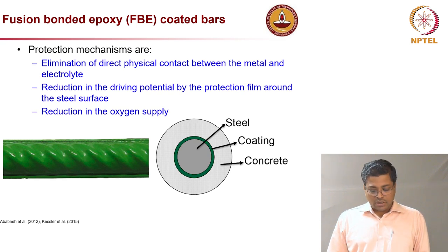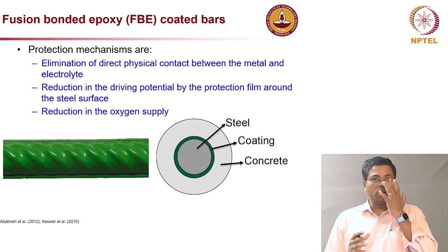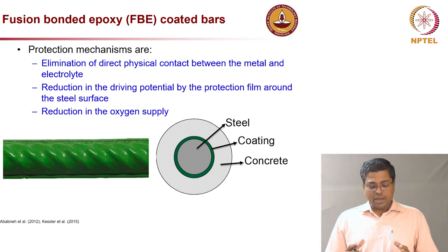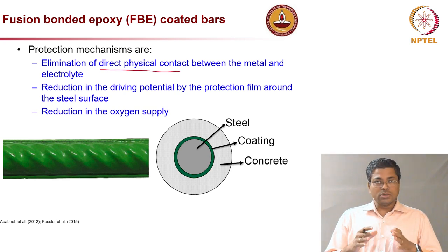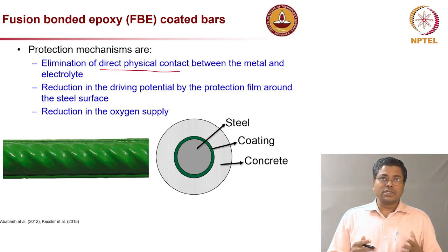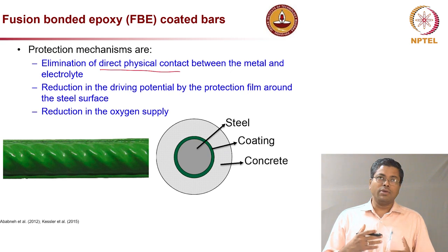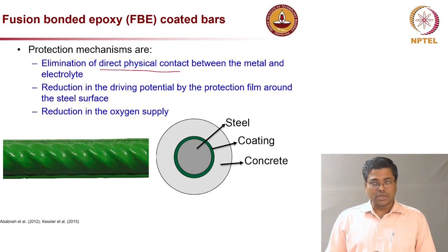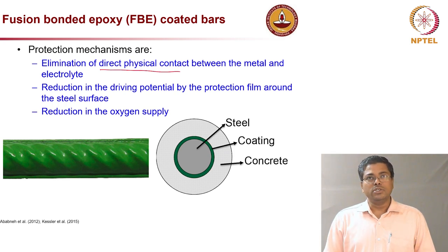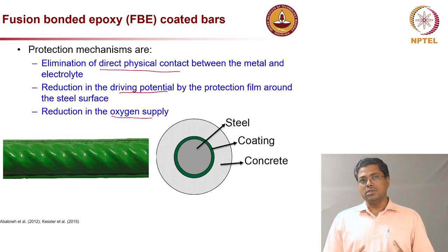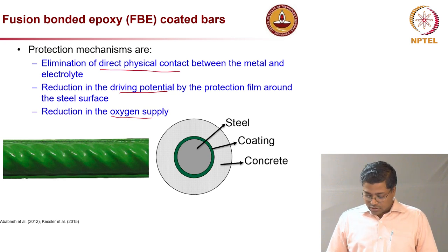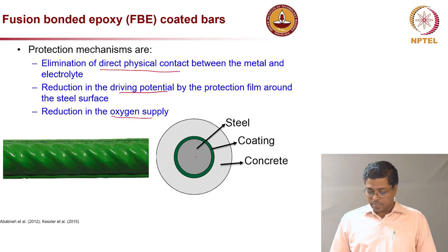Now let us look at fusion bonded epoxy coated steel rebars, which are also widely used. The protection mechanism: the epoxy coating eliminates direct physical contact between the steel and concrete. Because of this barrier, there is a reduction in the drive for corrosion. It is essentially a physical barrier that also reduces the availability of oxygen necessary for the corrosion reaction. The gray part is the steel, the green coating is the epoxy, and the outer surface is concrete.